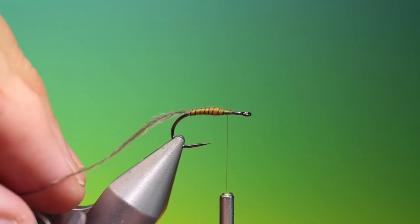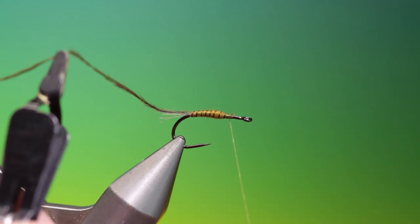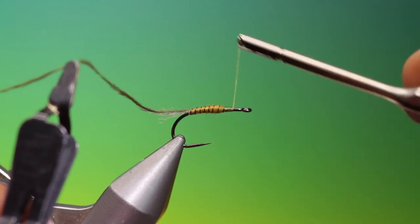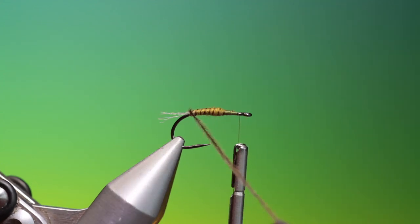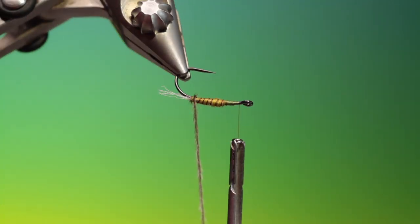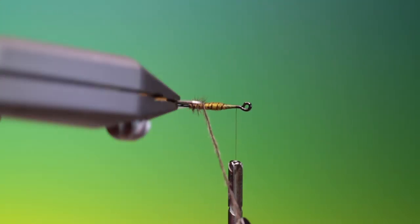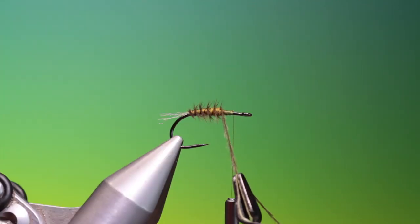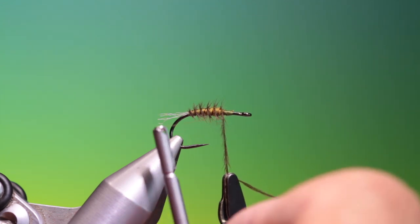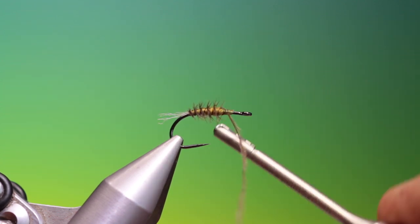So we have a hackle plier on our ostrich curl. You have to be very careful with this because these ostrich curls are a little delicate. Get that out of the way and then we can wind this up over the abdomen to there, tie that off and remove our hackle plier.